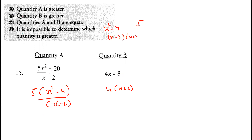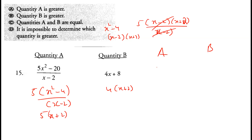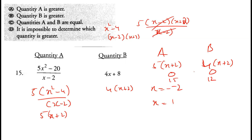Question 15: taking 5 as common gives 5 times (x squared minus 4) over (x minus 2), and 4 times (x plus 2). Writing x squared minus 4 as (x minus 2)(x plus 2), the expression becomes 5(x minus 2)(x plus 2) over (x minus 2), which simplifies to 5(x plus 2). Now comparing 5(x plus 2) to 4(x plus 2): if x equals 1, quantity A is 15 and B is 12. But if x equals minus 3, quantity A is minus 5 and B is minus 4, making B greater. So we cannot determine which is greater — option D is correct.